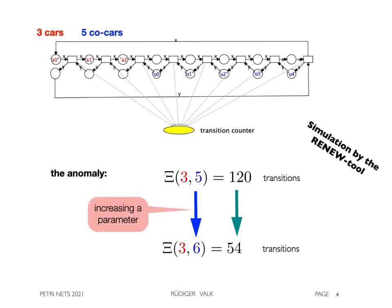Hence, increasing a parameter can reduce the size of the system. This is what we call the co-car anomaly, as it is not observed when the co-cars are replaced by undistinguishable items.